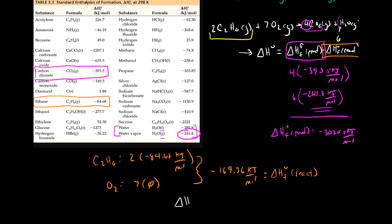So the standard enthalpy of this reaction is our products here. So it's negative 3024.8 kilojoules per mole minus the energy we found for our reactants which was negative 169.36. Again this is kilojoules per mole.